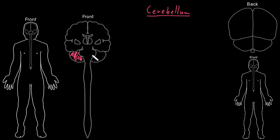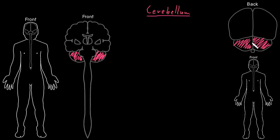You can't see the cerebellum that well from the front, because it's behind the brain stem. But if we come over to the back of the brain, the cerebrum is on top — here would be the left cerebral hemisphere and here would be the right cerebral hemisphere. And here you can see more of the cerebellum, because it's behind the brain stem. The cerebellum is also divided into hemispheres: the left cerebellar hemisphere and the right cerebellar hemisphere. And we can just see the brain stem coming into the spinal cord down here.